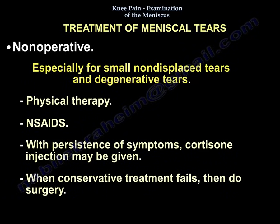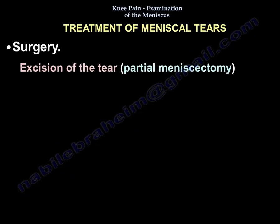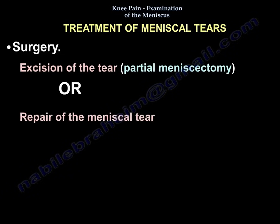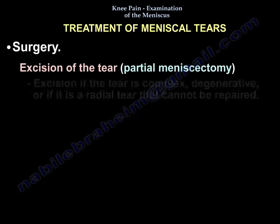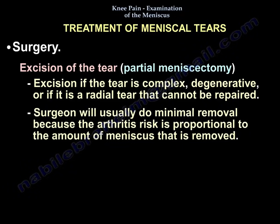When conservative treatment fails, surgery is performed. Surgery involves either excision of the tear — called partial meniscectomy — or repair of the tear. Excision is done if the tear is complex, degenerative, or if there is a radial tear that cannot be repaired. The surgeon will do minimal removal because the arthritis risk is proportionate to the amount of meniscus removed.